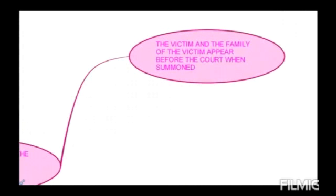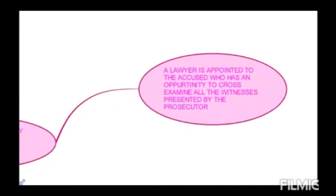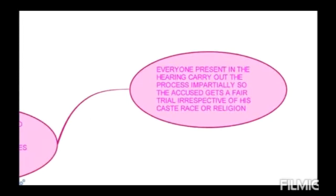The victim and the family of the victim appear before the court. The lawyer is appointed to the accused, who has an opportunity to cross-examine all the witnesses presented by the prosecutor. Everyone is present in the hearing, carrying out the process impartially, so the accused gets a fair trial irrespective of his caste, race, and religion.